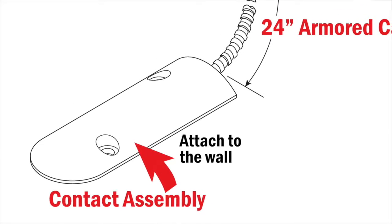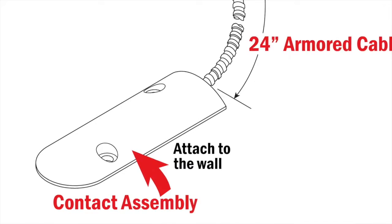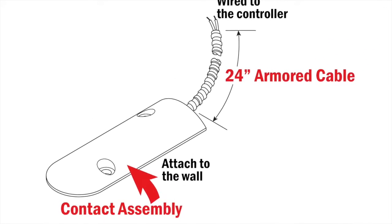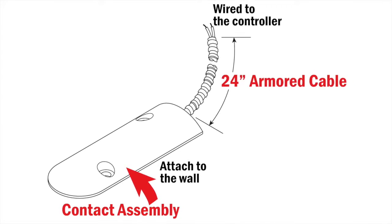The rounded rectangle is the contact assembly. Within the aluminum housing is the reed switch, or sensor if you prefer. This half of the door switch must be mounted to the wall and wired to the controller.